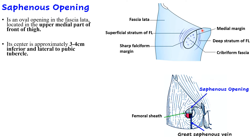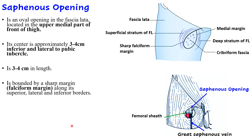The length of the saphenous opening is 3 to 4 centimeters. It has a sharp superior, lateral, and inferior border known as the falciform margin — a well-demarcated sharp margin. The medial margin is not very sharp. This is because the two-layered arrangement of the fascia lata creates the opening: the superficial layer forms the lateral margin, while the deep layer covers the pectineus muscle going deep.